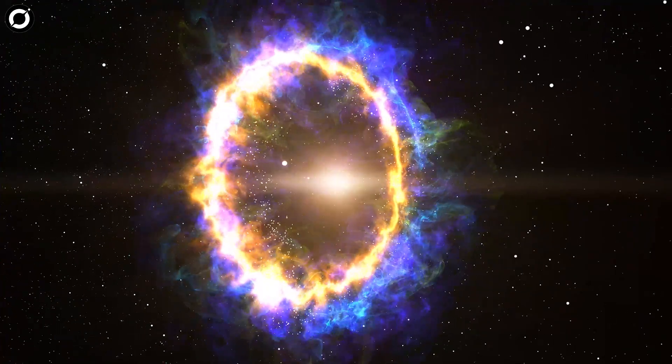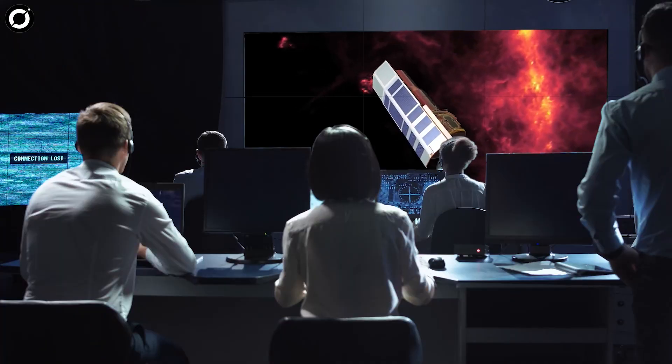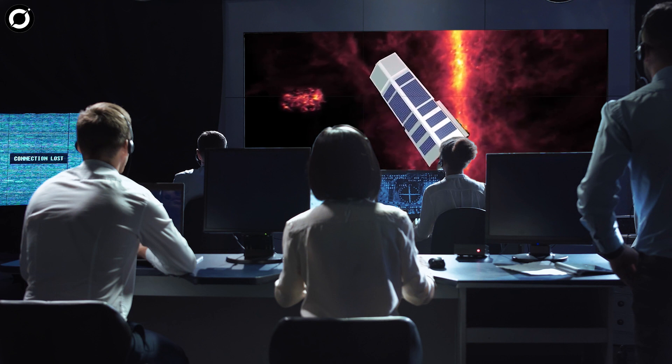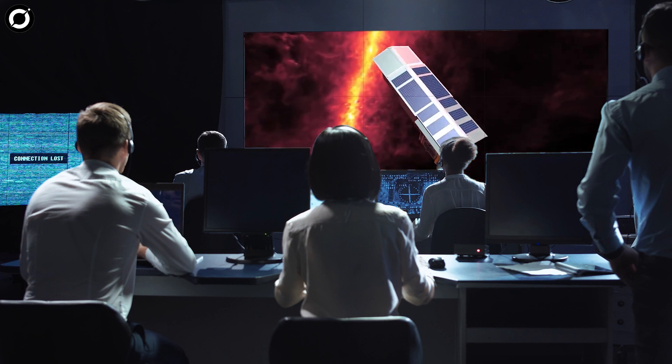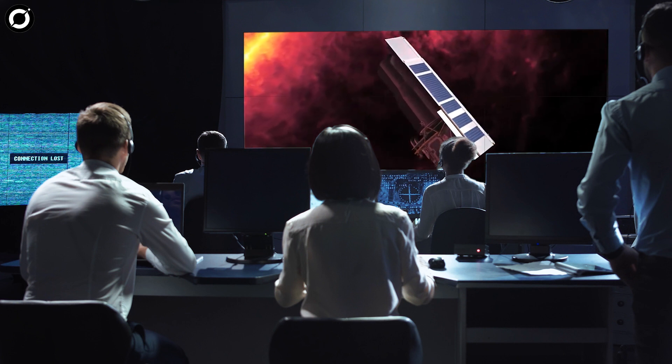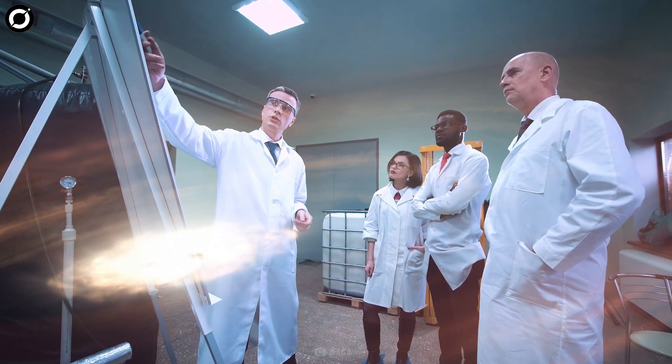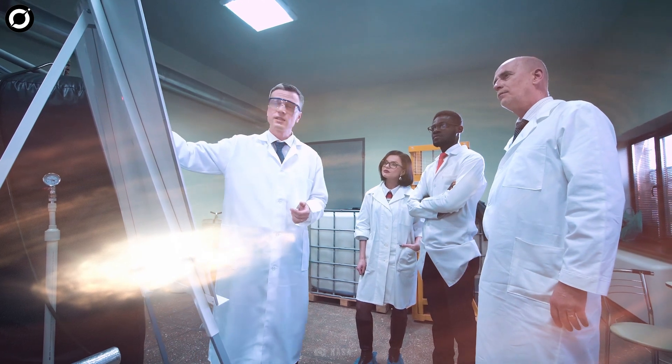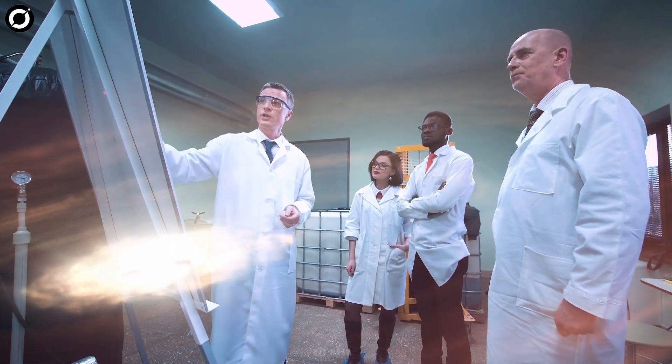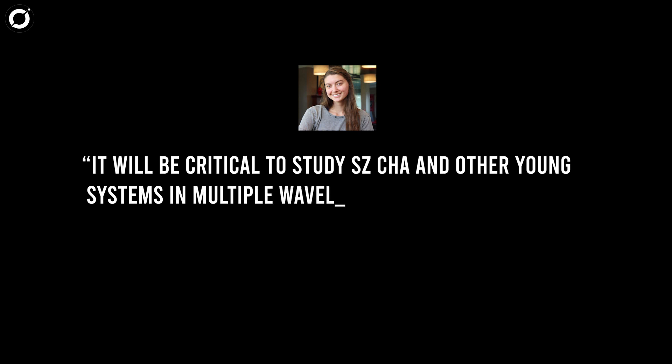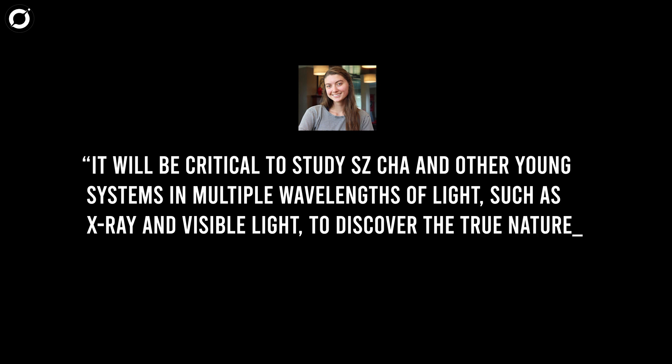As per the scientists, winds are typical in a system with a recently formed active star, but it is reasonable to catch the system during a peaceful, wind-free time as Spitzer did. The scientists are already putting together future studies of SD Char using Webb and other telescopes to solve its mysteries. It will be critical to study SD Char and other young systems in multiple wavelengths of light, such as X-ray and visible light, to discover the true nature of this variability we've discovered, stated Boston University co-author C.E. Pitman.